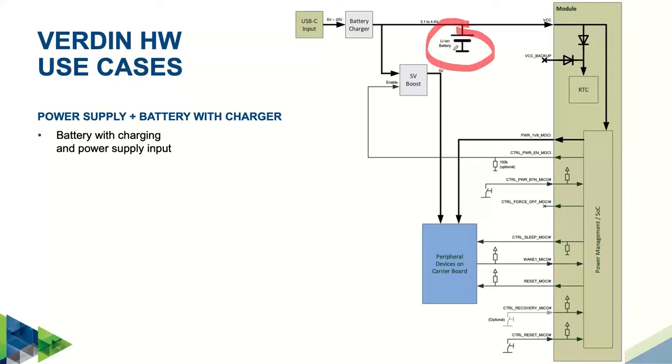There's also a 5 volt boost converter, which will generate 5 volts for any peripherals that might need it. Here, you can see we're using the control power enable MOCI signal to enable this 5 volt supply. The signal, this power enable signal goes high just after the module is powered, which guarantees that the peripherals will be supplied early. Just like in the previous example, we are also using the 1.8 volt output from the module to power any peripherals that might operate on that voltage.